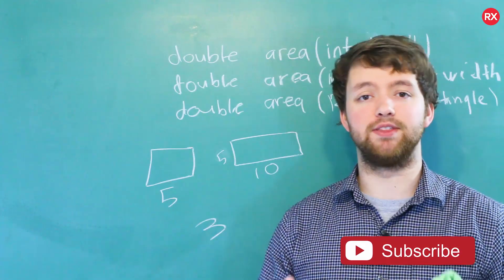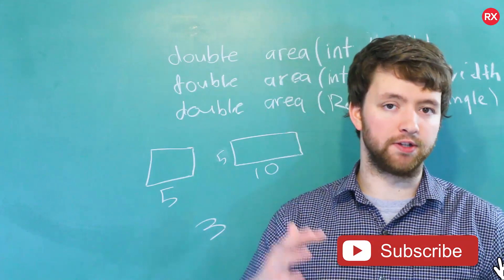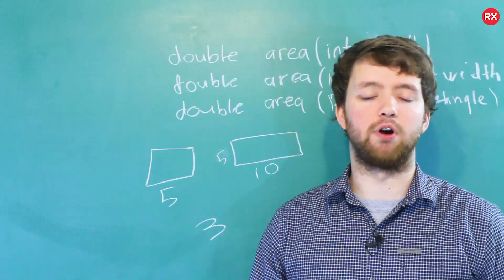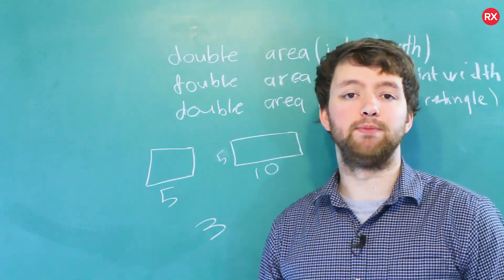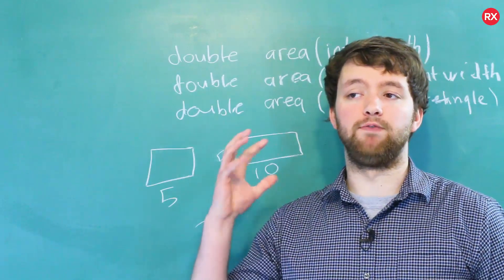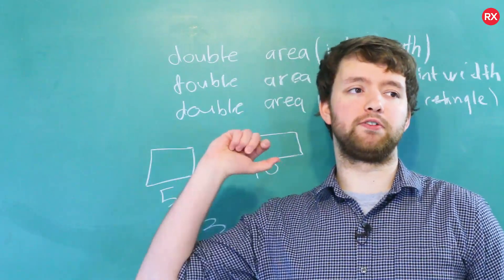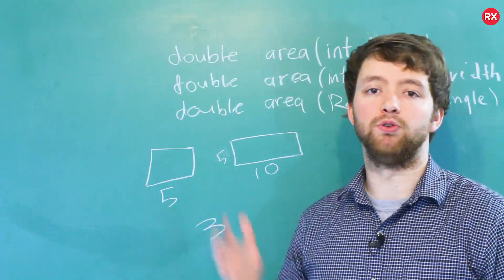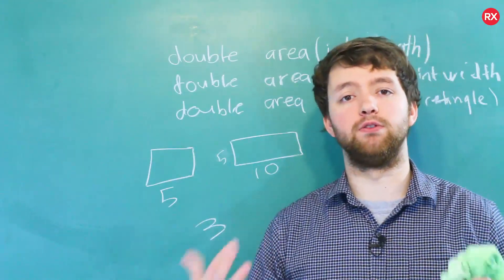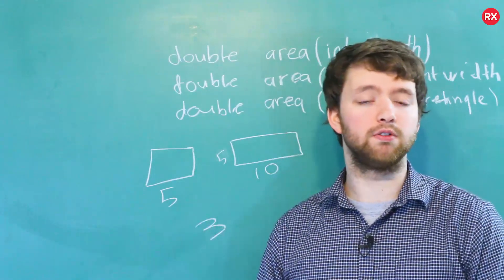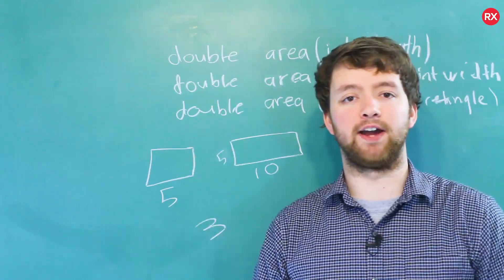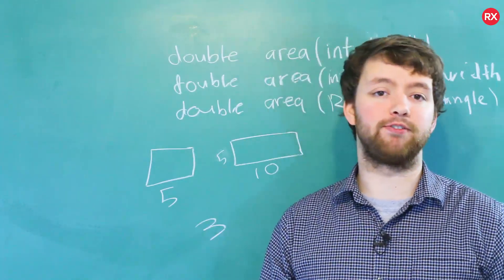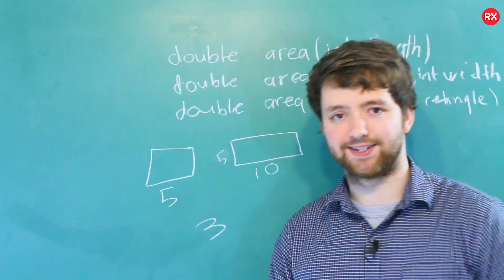As a side note — and this might not become completely clear until a couple videos from now — overloading is not designed for optional parameters. For example, if you have a function where you want to default an argument to the value 10 when it's not passed in, that's not something you would use overloading for. You can actually use default argument values, and we're going to go through an example of that in the upcoming videos. But since this is a concept video, I thought I'd throw that in as a little sneak peek.